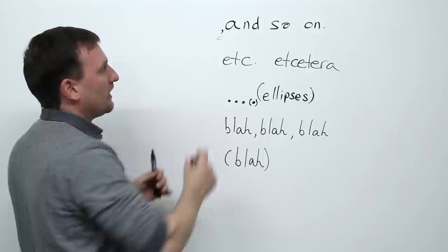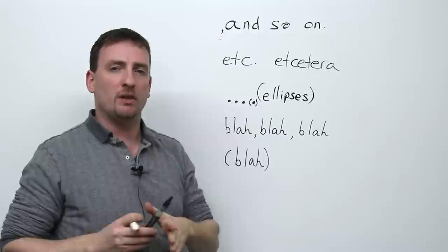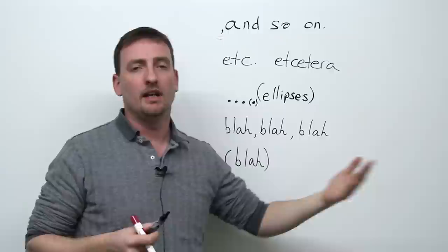First, and so on. First of all, notice I put a comma before it. Why? Because this will always come at the end of a sentence or after a list of some sort. When we put and so on, we mean, and we continue with the same examples.